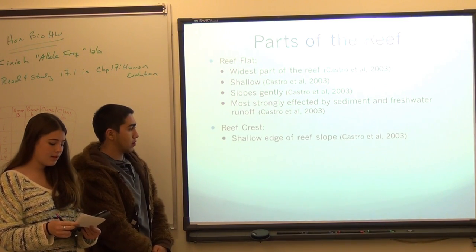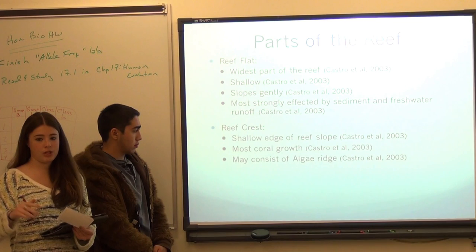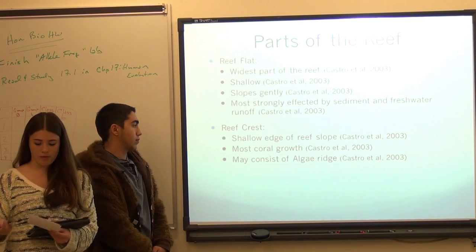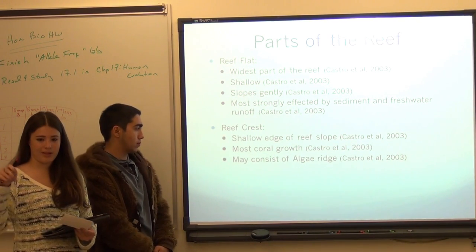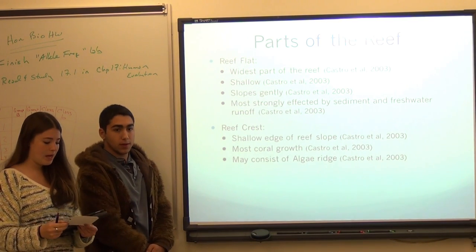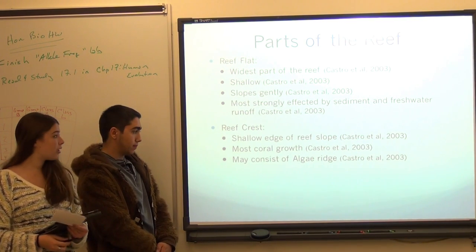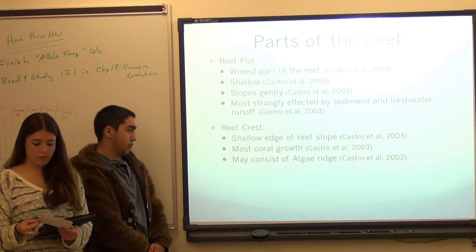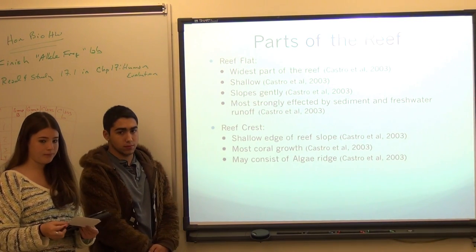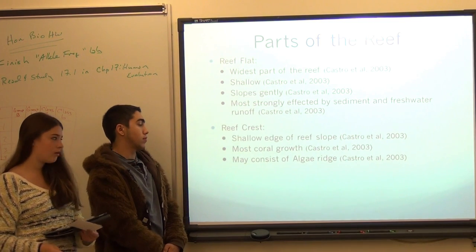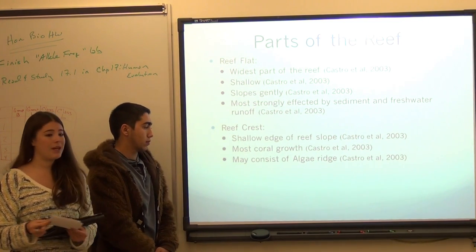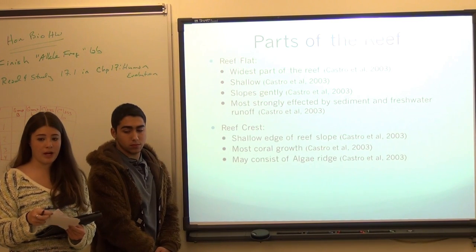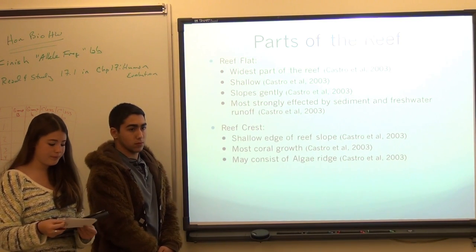Then you have the reef crest. It's the shallow edge of the reef slope, right after the reef flat and right before the large slope. It usually has more luxuriant growth than all the other areas — more coral growth than the reef slope and the reef flat. It may also consist of an algal ridge, which protects the coral from wave action.